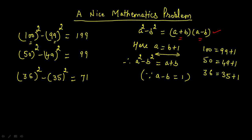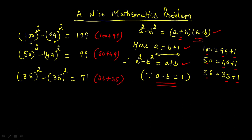We make use of this algebraic identity and write a equal to b plus 1 — just like 100 is 99 plus 1, 50 is 49 plus 1, and 36 is 35 plus 1. In all these cases, a minus b equals 1, so the answer of a squared minus b squared is simply a plus b. So 100 squared minus 99 squared equals 100 plus 99, and 50 squared minus 49 squared equals 50 plus 49.